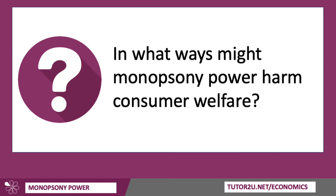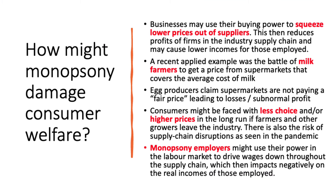However, monopsony power has some damaging consequences as well. Businesses may use their buying power to squeeze lower prices out of suppliers, which lowers the profitability of firms in the supply chain and might cause falling incomes for those employed. We've seen controversy over the price of milk — many independent farmers are getting a price from supermarkets that doesn't even cover their average cost of production. Egg producers have claimed supermarkets are not paying a fair price, leading to economic losses. If farmers and growers leave the industry, consumers might face less choice and higher prices in future.